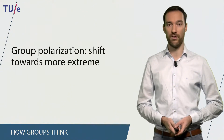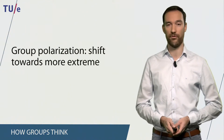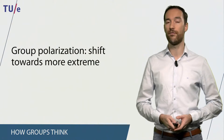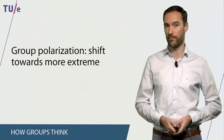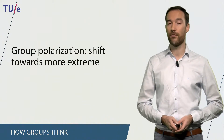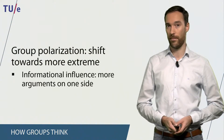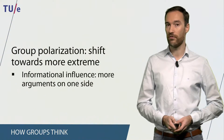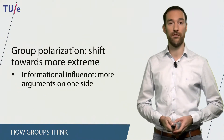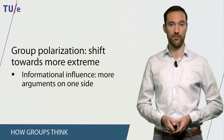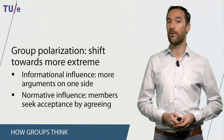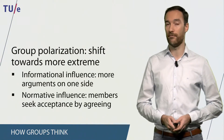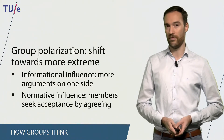Groupthink could lead to group polarization — a shift towards a more extreme position. So if you start a discussion where you lean slightly in favor of a certain position, you are very likely to end up being strongly in favor of that position. Group polarization is influenced by two types of social influence. Informational influence means that if you hear more arguments on one side, you are more likely to agree with that side. Normative influence occurs because members seek acceptance by agreeing with the majority, and if there is a small majority in favor of a decision, many members tend to agree.